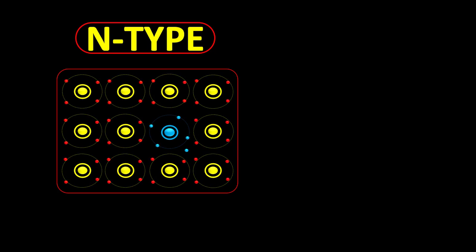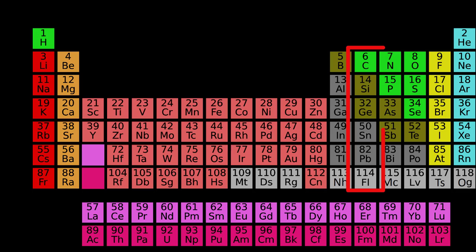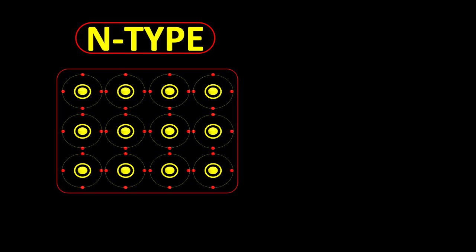Now we look inside an n-type semiconductor. Silicon belongs to group 4 of the periodic table. In a crystal of silicon, each atom has four electrons in its outermost shell. To complete an octet, each atom has to form a covalent bond with its neighboring atoms.